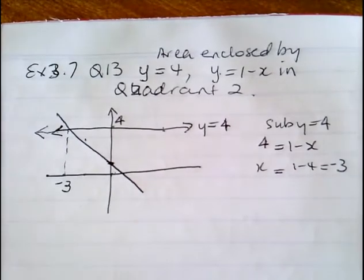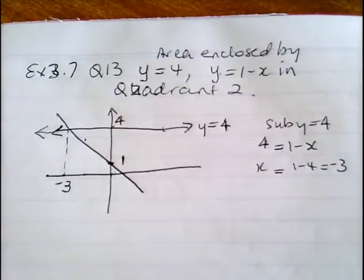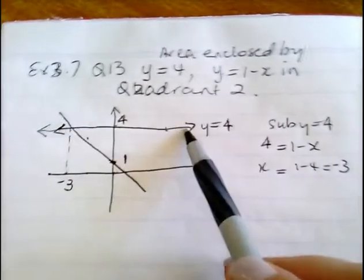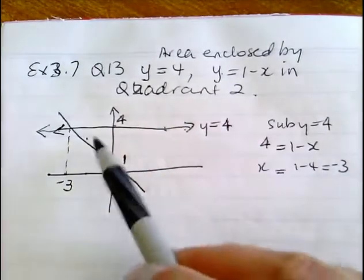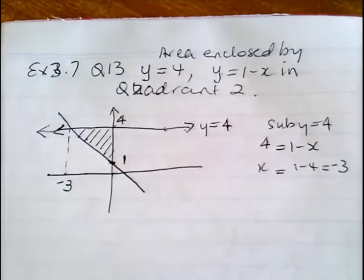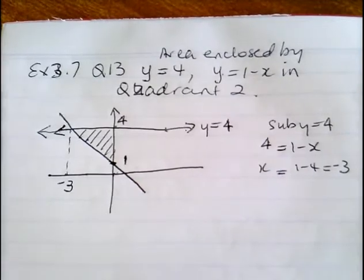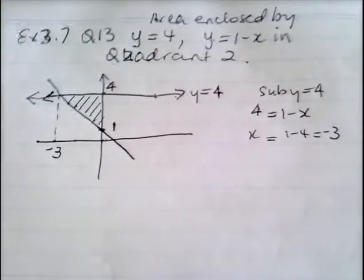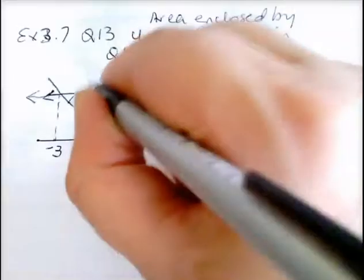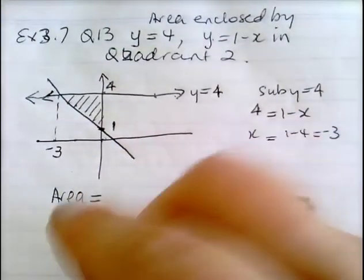You don't have to use integration if you don't want — you can just use area of a triangle. Find the area enclosed by y equals 4 and y equals 1 minus x in quadrant 2. There are two ways: using an area formula, and using an integral.